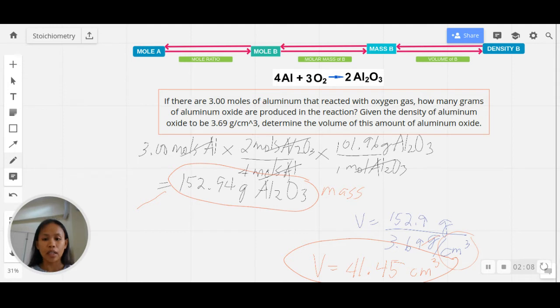To recall, density's primary equation is mass over volume. To get volume, that's going to be mass over density. So volume is the mass that you got over the given density 3.69. This way you cancel out both of the grams and you're left with cm³. Therefore, inputting all these values in the calculator, you will get 41.45 cubic centimeters.